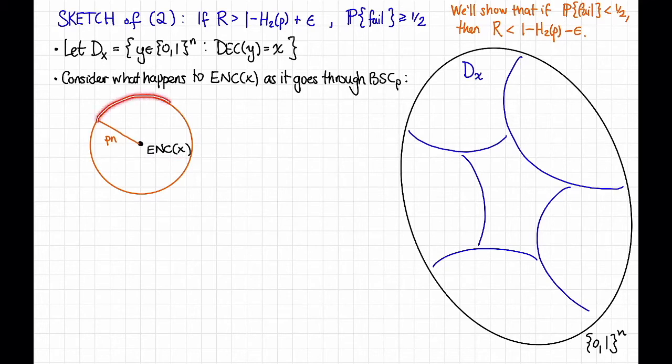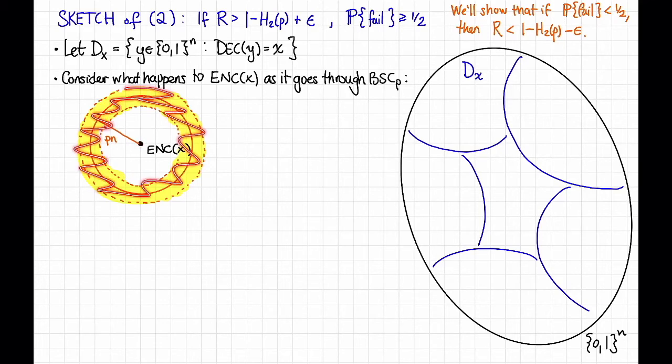So what that means is that after I pass the encoding of x through the binary symmetric channel, it's not going to end up exactly on this shell here, but it'll end up in some neighborhood of that. Let's say that looks like this. So what's the width of this annulus here? It's going to be some parameter that depends on this epsilon. I don't want to do out the technical details for this proof sketch, but let's just say that it's wide enough so that with really high probability, when the encoding of x passes through the binary symmetric channel, it's going to end up somewhere in this annulus. And let's call this annulus S_x.